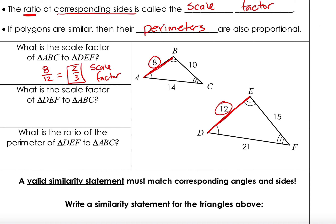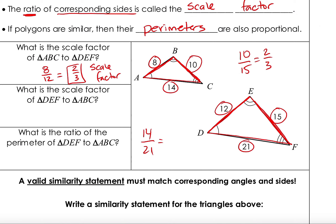If we do that to each side, we see the same result. BC and EF are corresponding, giving a 10 to 15 ratio; dividing by 5 also gives 2/3. And AC, which is 14, matches with DF, which is 21 — a 14 to 21 ratio. Simplified, that's also 2/3. So that is our scale factor.